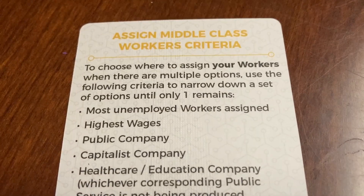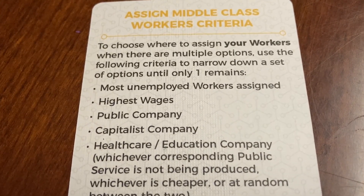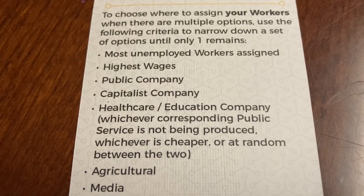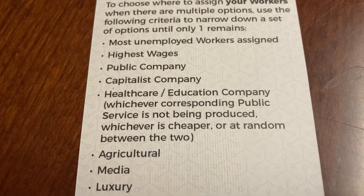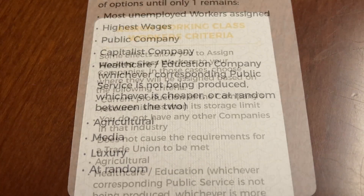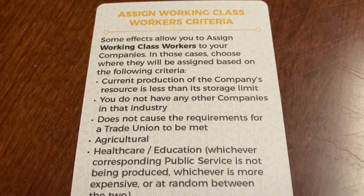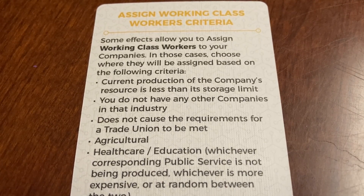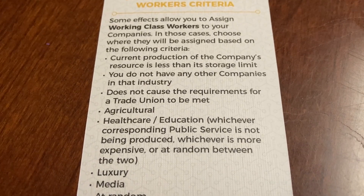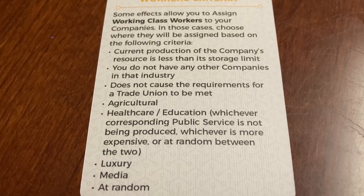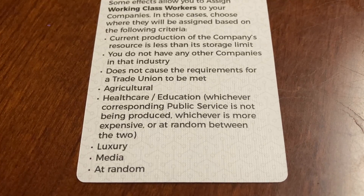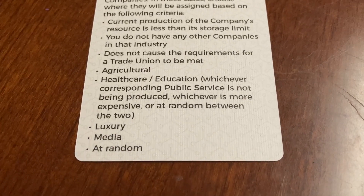When assigning middle class workers, the priorities are: first, most unemployed workers are assigned; then highest wages; third, public company; next, capitalist company; then healthcare and education companies — prioritizing whichever is not being produced, whichever is cheaper, or random between the two; then agricultural, media, luxury, and then at random. When assigning working-class workers, priorities are: first, ensure current production of the company's resource is less than your storage limit; second, you do not have any other companies in that industry; third, you do not cause the requirements for a trade union to be met; fourth, agricultural; fifth, education and healthcare — prioritizing whichever is not being produced, then whatever is more expensive, or random; then luxury, then media, and finally at random.